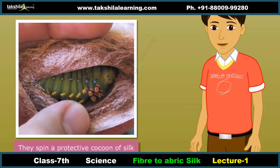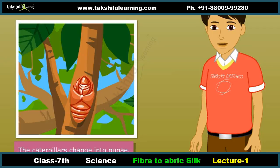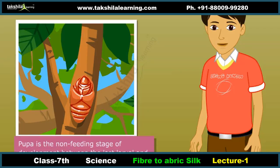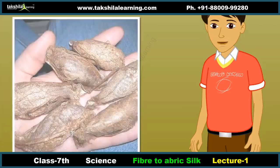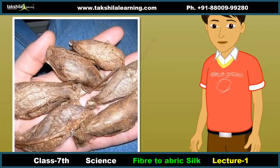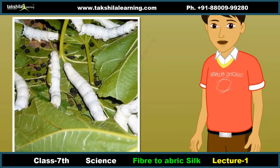Then they spin a protective cocoon of silk threads around themselves. These cocoons are white or golden in color. Inside the cocoon the caterpillars change into pupae. As long as the caterpillars pupate, they do not eat. After two or three weeks, beautiful silk moths emerge from the cocoons.